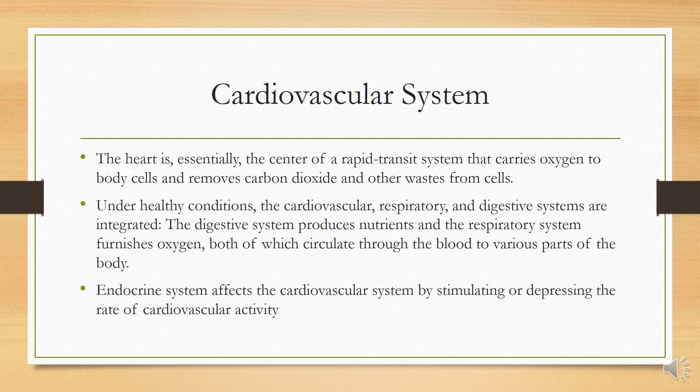The cardiovascular system consists of the heart, arteries, and veins. The heart is a muscle that by contracting and relaxing pumps blood throughout the body. It is essentially the center of a rapid transit system that carries oxygen to body cells and removes carbon dioxide and other waste. When an individual is healthy, the cardiovascular, respiratory, and digestive systems are all integrated with each other.